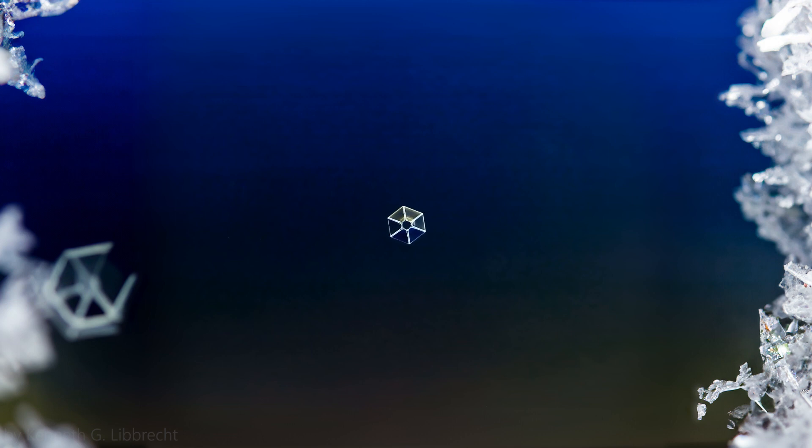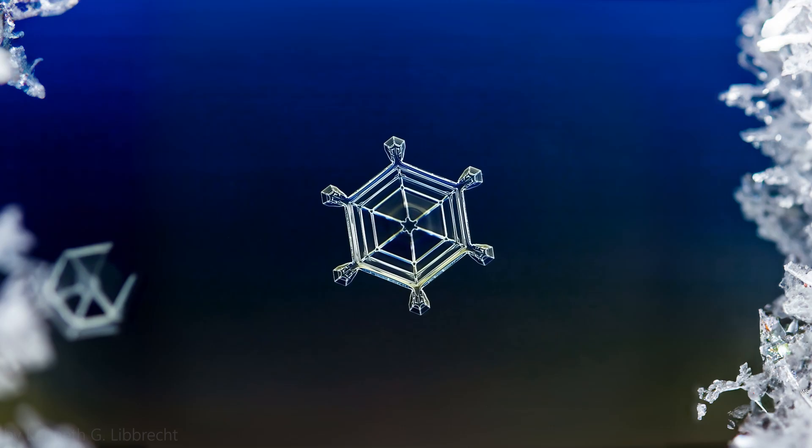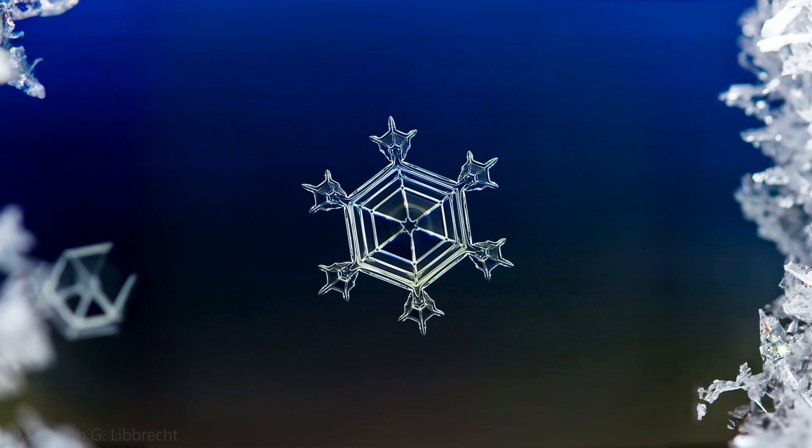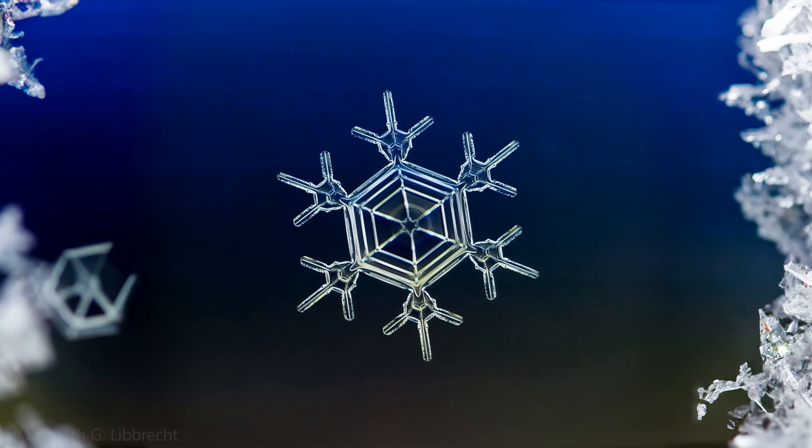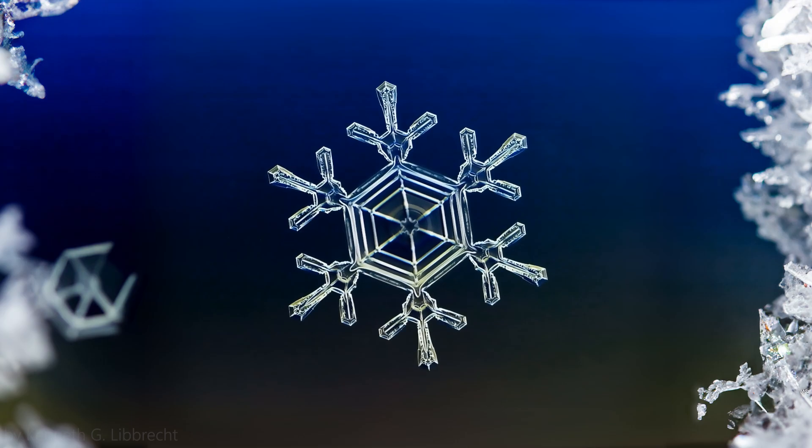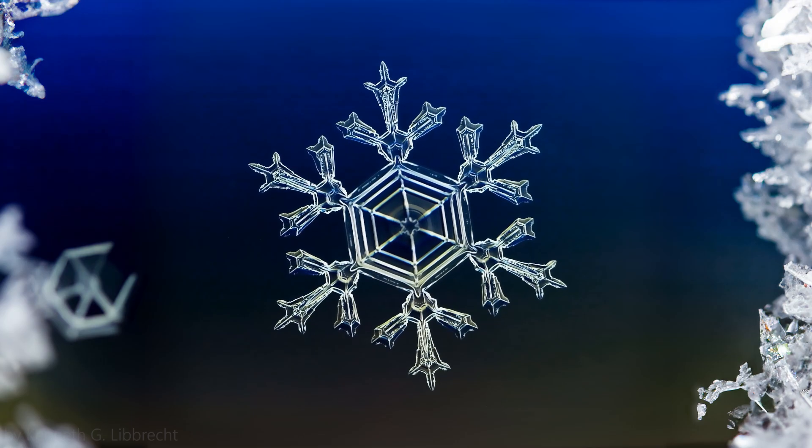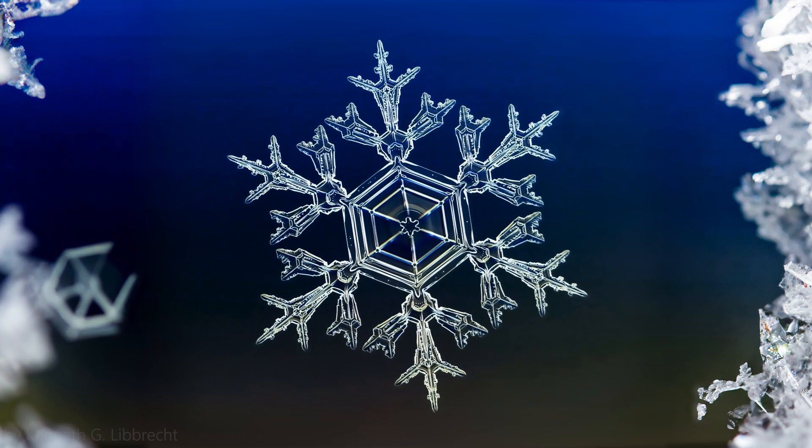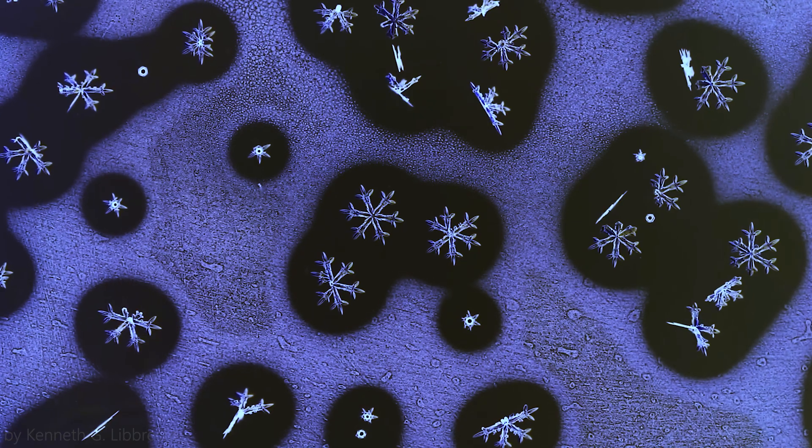But why are snow crystals so small? Most of these formations won't get bigger than just a few millimeters. The short explanation is that larger and more intricate snowflakes tend to form in colder temperatures with higher humidity, providing ample opportunities for crystal growth and aggregation.